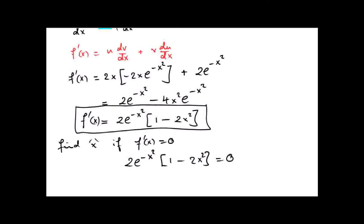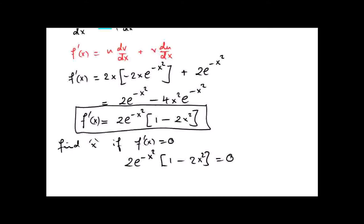If you multiply two things together and the answer is 0, one of them has to be equal to 0. So either e to the power of minus x squared equals 0, which is impossible — because e to the power of anything is a positive number. You could argue that if you make x bigger and bigger, e to the power of minus x gets nearer and nearer to 0, but it never actually reaches it. So the only possible way f dash x could really be 0 is if the second bit, 1 minus 2x squared, was equal to 0.